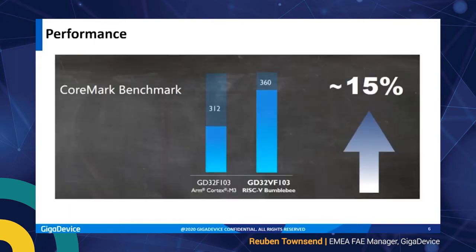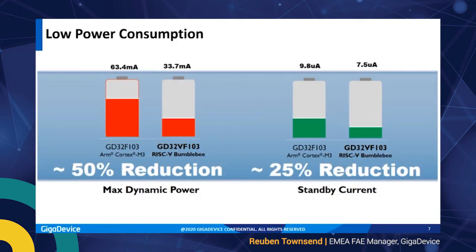A common question is how performance compares to other well-known commercialized ISAs such as the ARM Cortex. GigDevice also offers microcontrollers based on the ARM Cortex-M3, and on a like-for-like basis the RISC-V based MCU shows an increase of approximately 15 percent on the CoreMark benchmark. Power consumption is also very good — in standby there's a reduction of 25 percent, and for dynamic power a reduction of approximately 50 percent.